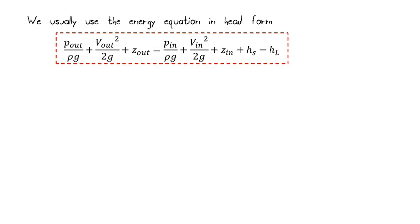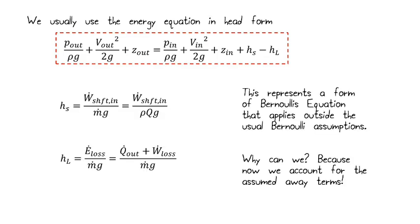Generally, we're going to use the energy equation in units of head, which we remember is units of distance, usually meters, in the SI system. So we have that written like this. Here's the part that we've seen before. This is our Bernoulli component up to this Z in. Then we're going to add in a term that we call H sub S, the shaft head, and then minus a term that we call H sub L, the loss head. And these two terms are ways that we're going to account for these things that we used to not include in the Bernoulli's equation.